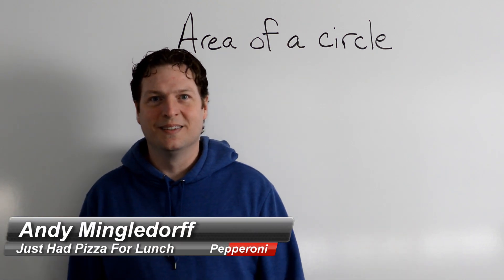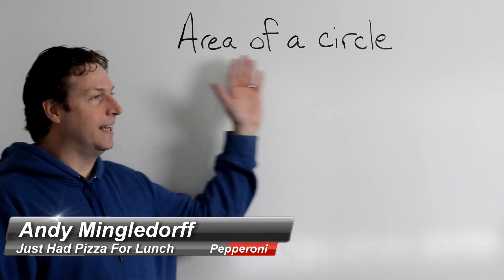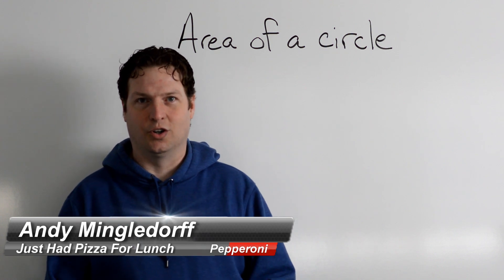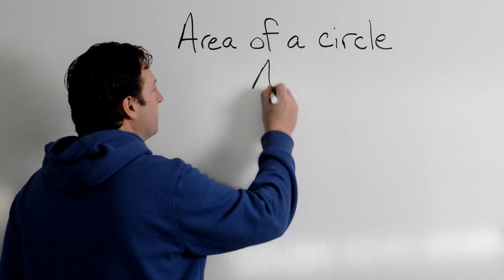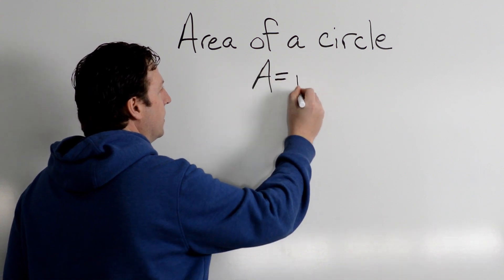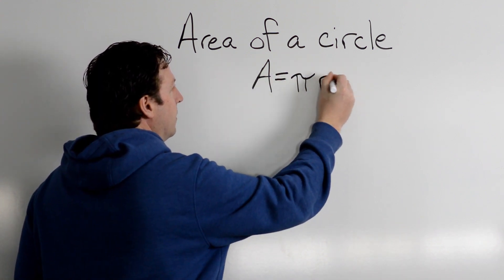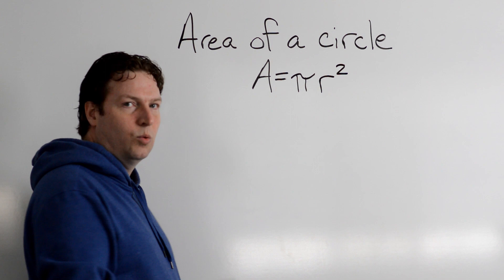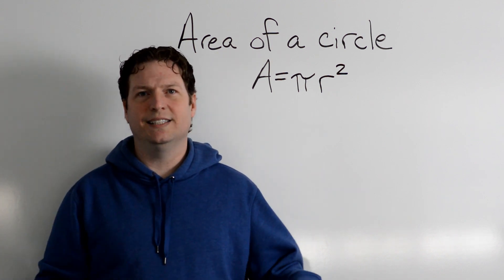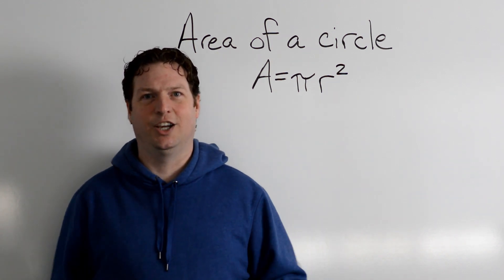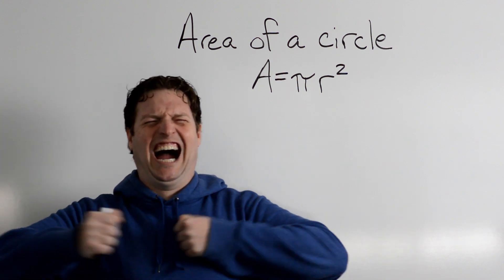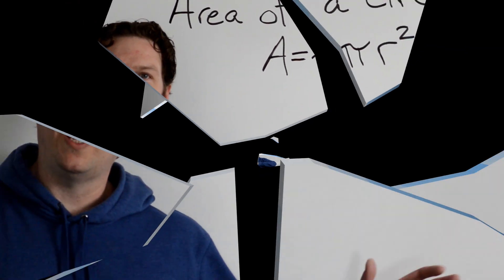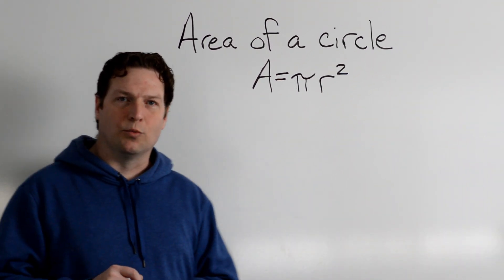Hey everyone, welcome! Today we're going to find the area of a circle using the formula A equals pi r squared. Super easy, super quick. Let's get going. Okay, let's break down the formula real quick.